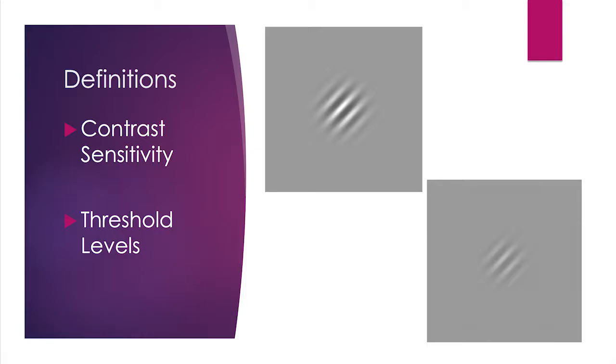As you can see on the screen, I have two separate squares. It would be your ability to distinguish that one of these squares is lighter than the other one. Contrast sensitivity is measured by threshold levels. A threshold level is the smallest amount of change required for somebody to notice that there is a difference between two objects.